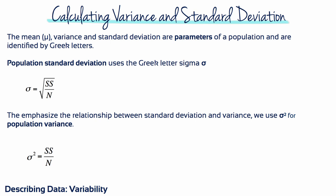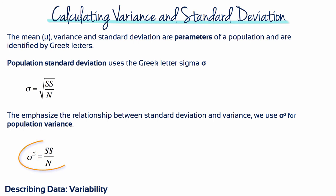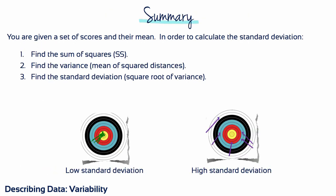With the definition and calculation of sum of squares established, the equations for variance and standard deviation become relatively simple. The population standard deviation uses the Greek letter sigma: sigma equals the square root of the sum of squares divided by N. To emphasize the relationship between standard deviation and variance, we use sigma squared for population variance: sigma squared equals the sum of squares divided by N. To summarize the process: first find the sum of squares, then use this to calculate the variance, then take the square root of the variance to find the standard deviation.